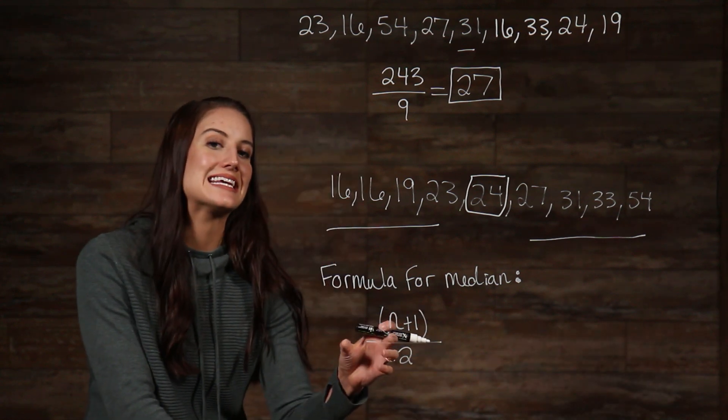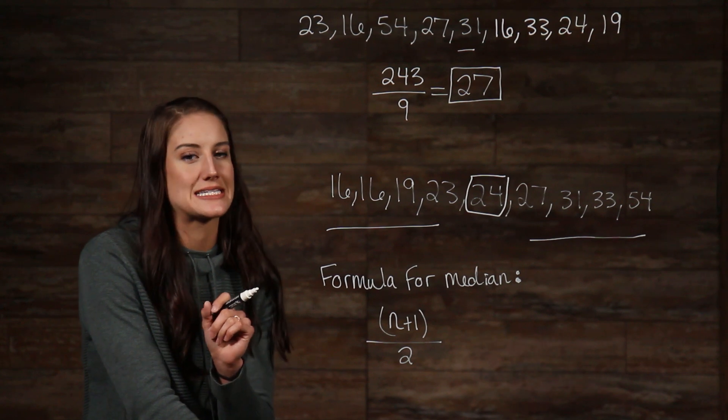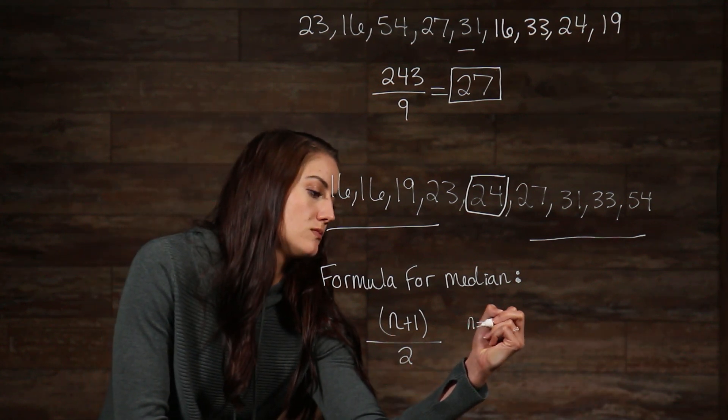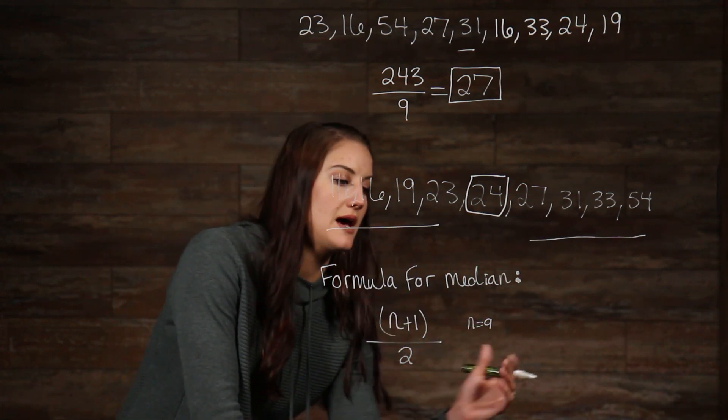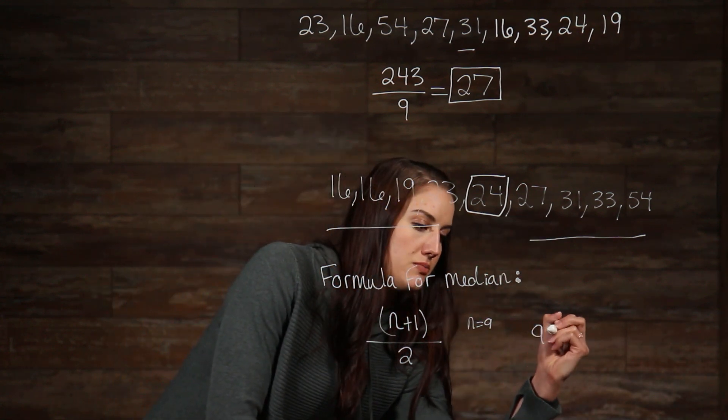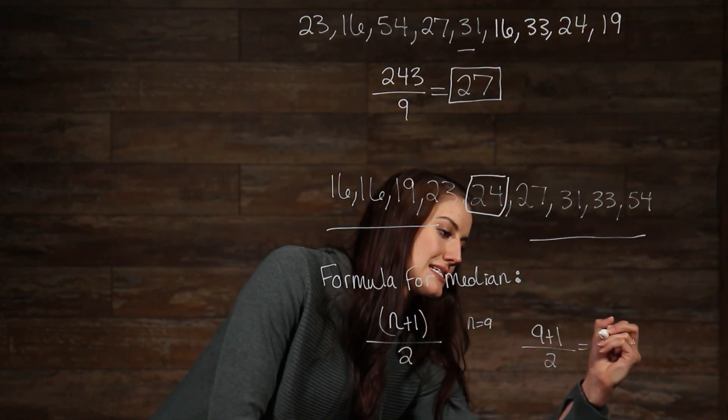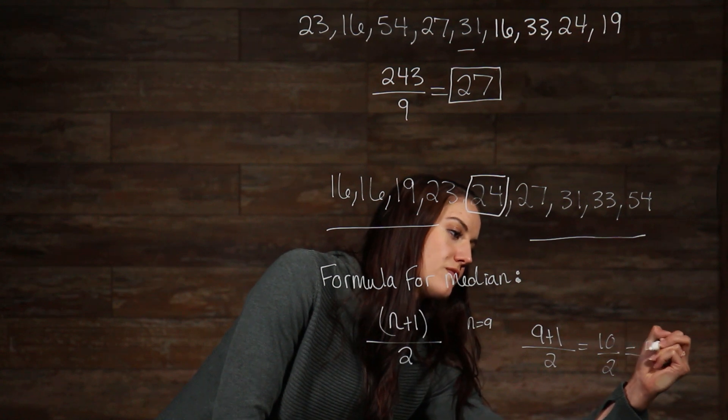Now, in this formula, n is the amount of numbers on our list. Now, let's see if this works for us. Our n is equal to nine. So, I'll just write that out. Because we have nine numbers on our list, we'll just use the same list. So, with that, we have (n+1)/2, which is (9+1)/2, which is equal to 10 divided by 2, which is equal to 5.